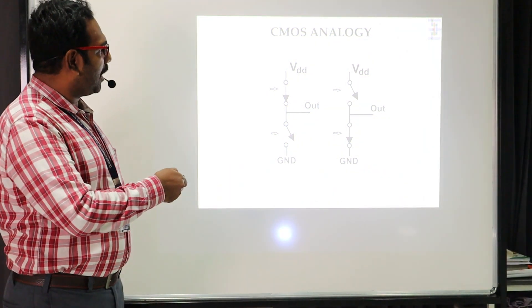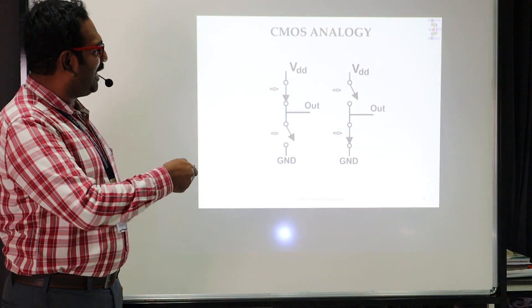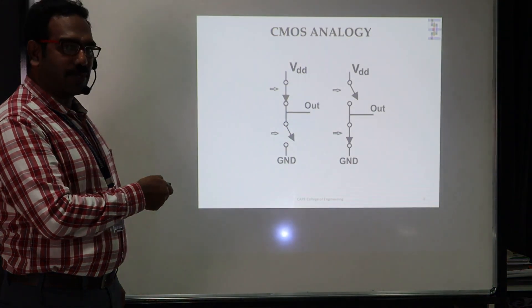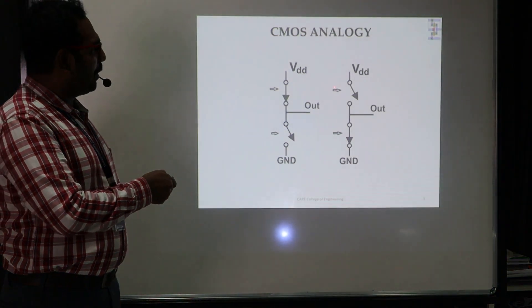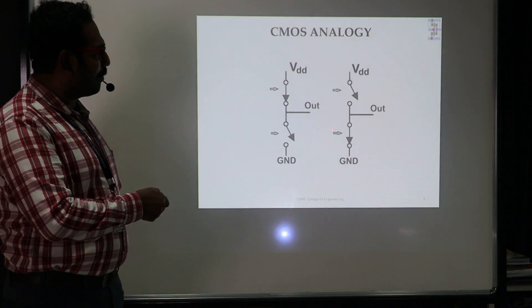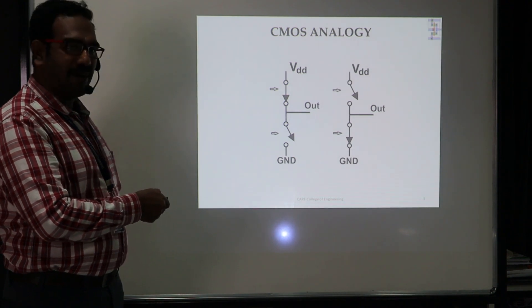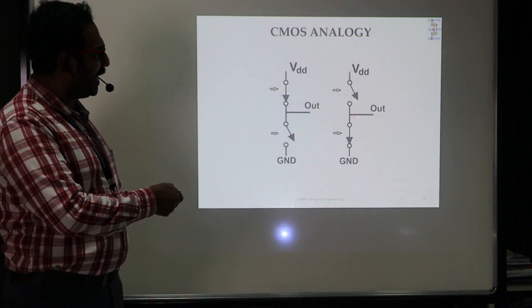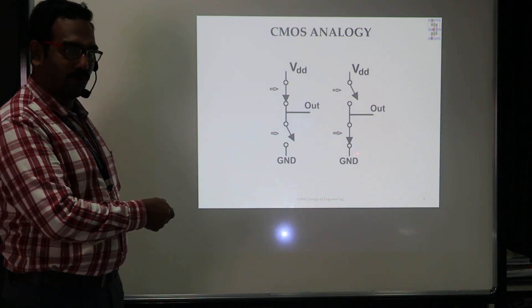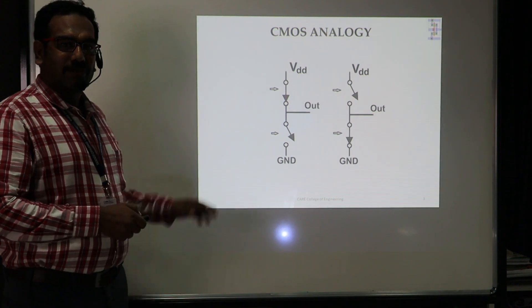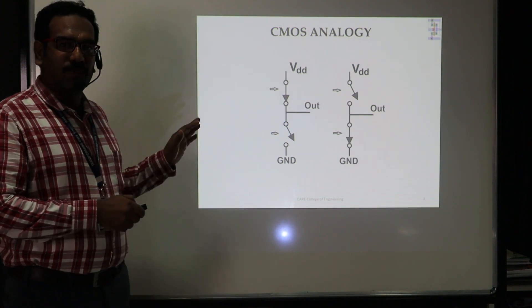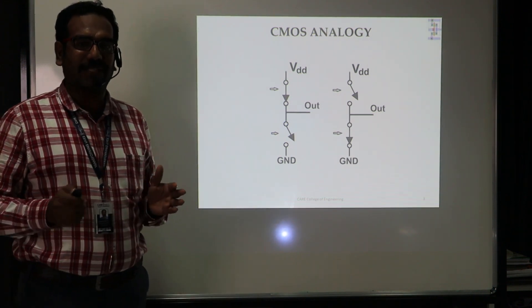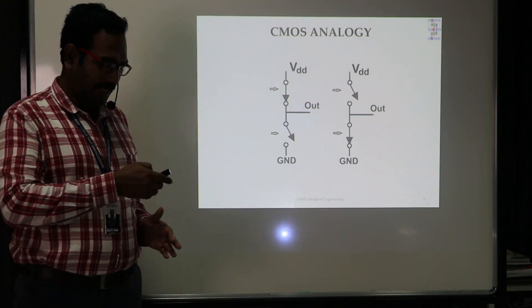At the same time, when I am giving logic 1, the PMOS transistor is switched off and NMOS is switched on, which means the output is directly connected with ground. This is a simple switch analogy to understand CMOS logic.